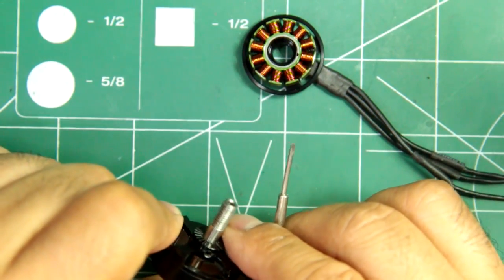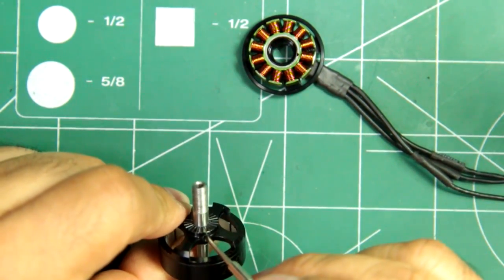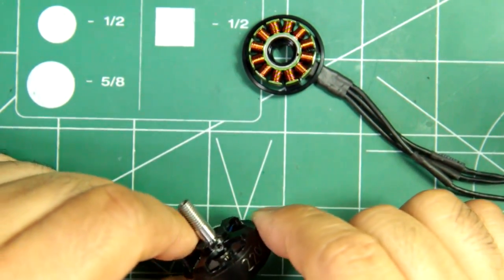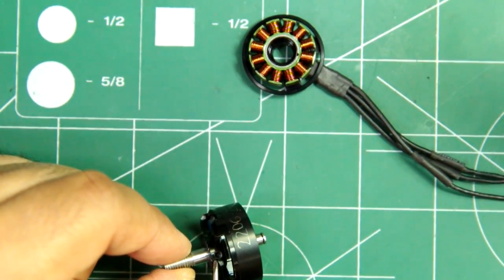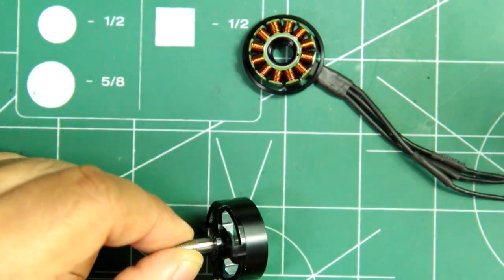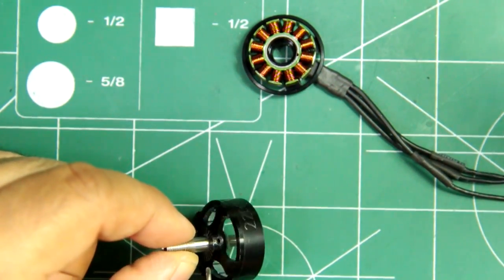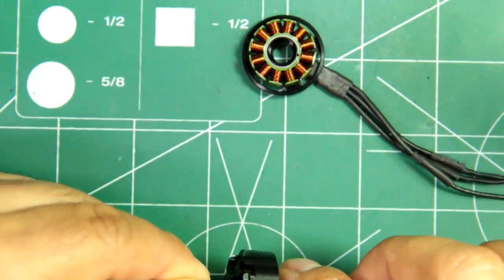There's a hole there for a set grub screw right there. Actually there's two, there's two set screws right there.